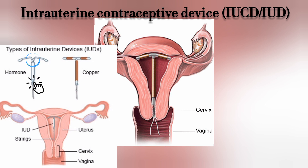The hormonal IUCD has no copper rings and has more side effects compared to the copper one — particularly heavy bleeding, because it contains hormones. Most people actually prefer to use the copper intrauterine device because it has fewer side effects.